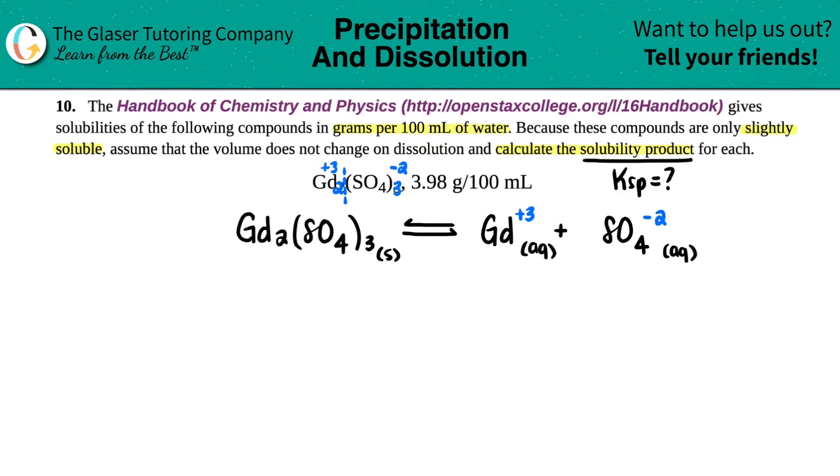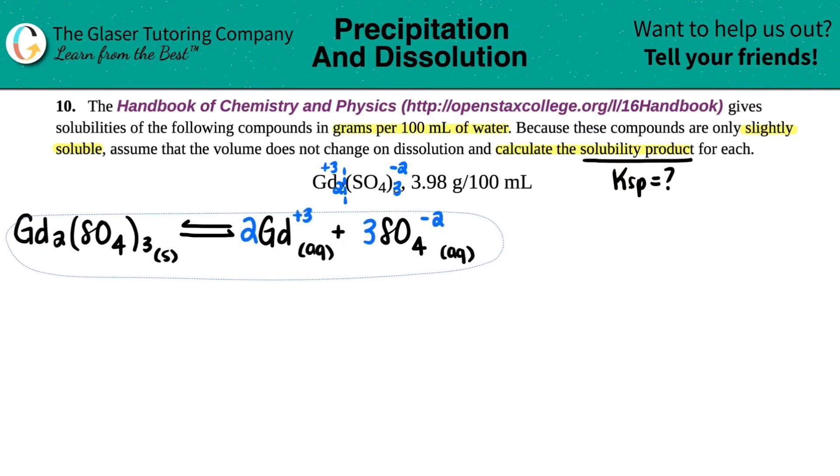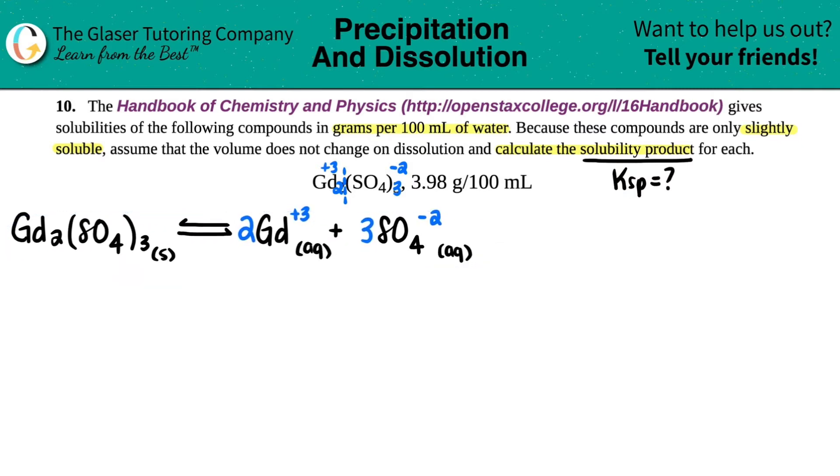Now we just have to make sure that this equation is balanced. I have two Gds. So I have to come over to this side and say that I need two Gds. There was three SO₄s. So I need to put a three in front of here. And now I have my full balanced equation, which I'm going to put over here. Now on this side, I'm going to start writing out what the general formula for the Ksp is. Ksp is pretty easy. The formula is right here.